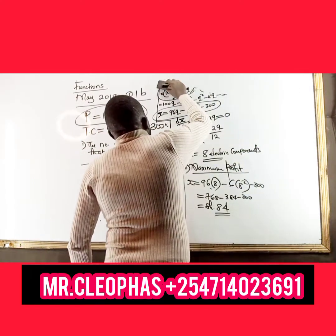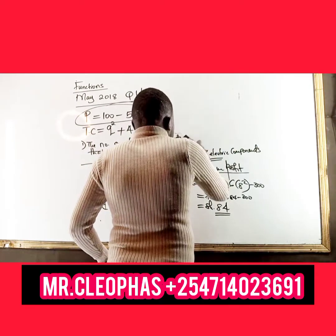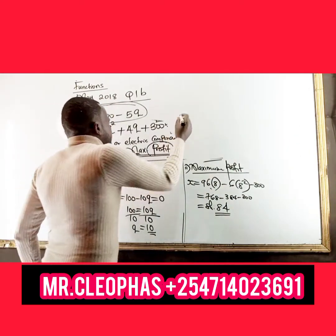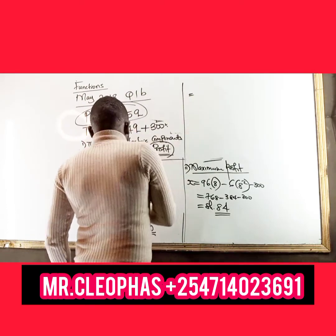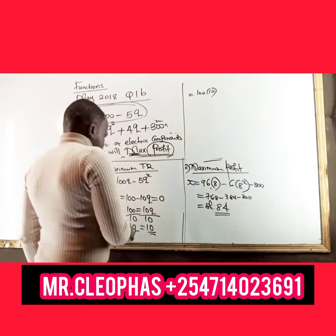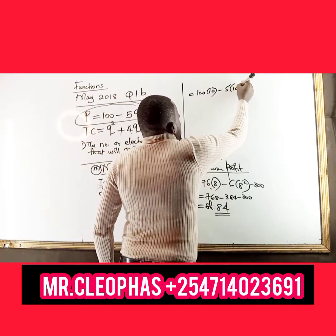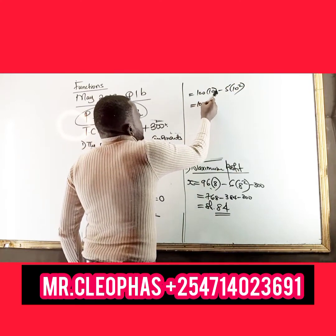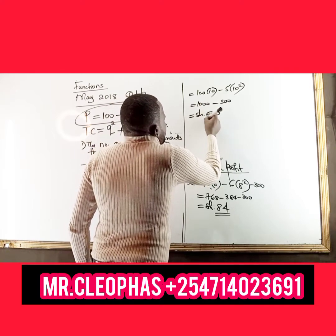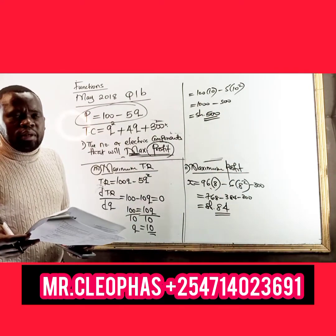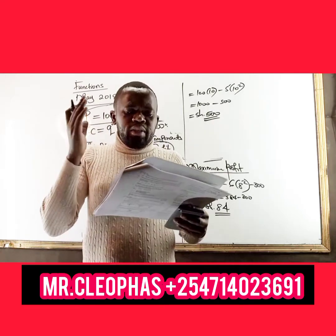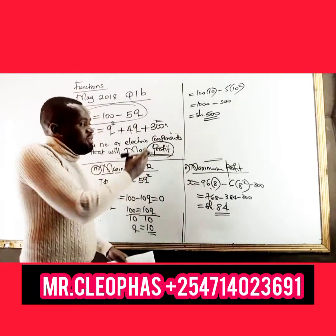Substituting Q equals 10 into the revenue function: maximum revenue equals 100 times 10 minus 5 times 10 squared. This gives 1,000 minus 5 times 100, which is 1,000 minus 500 equals 500 shillings. That is the maximum total revenue, which is what the examiner required.